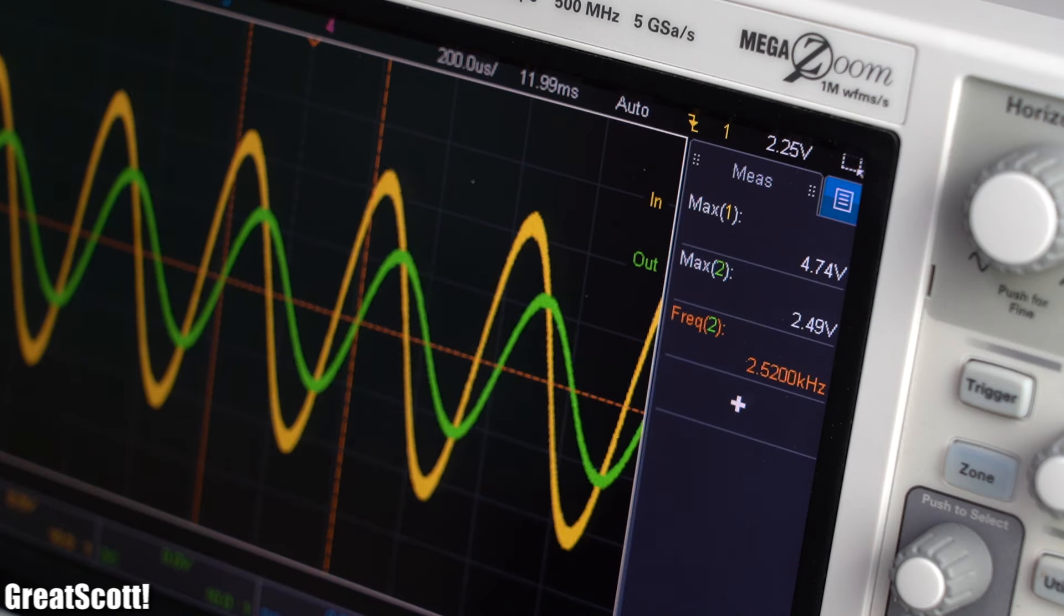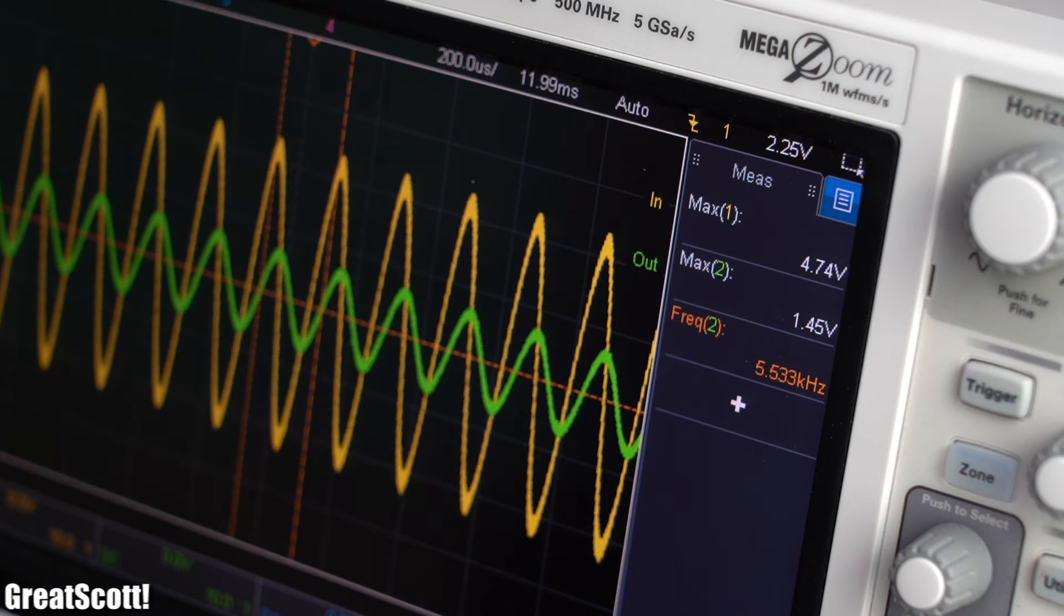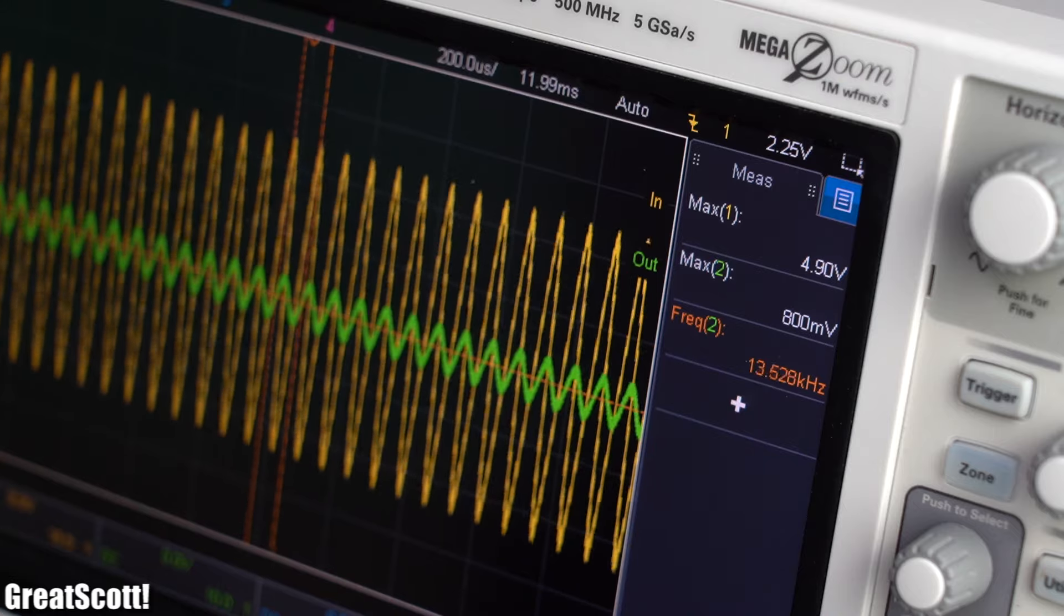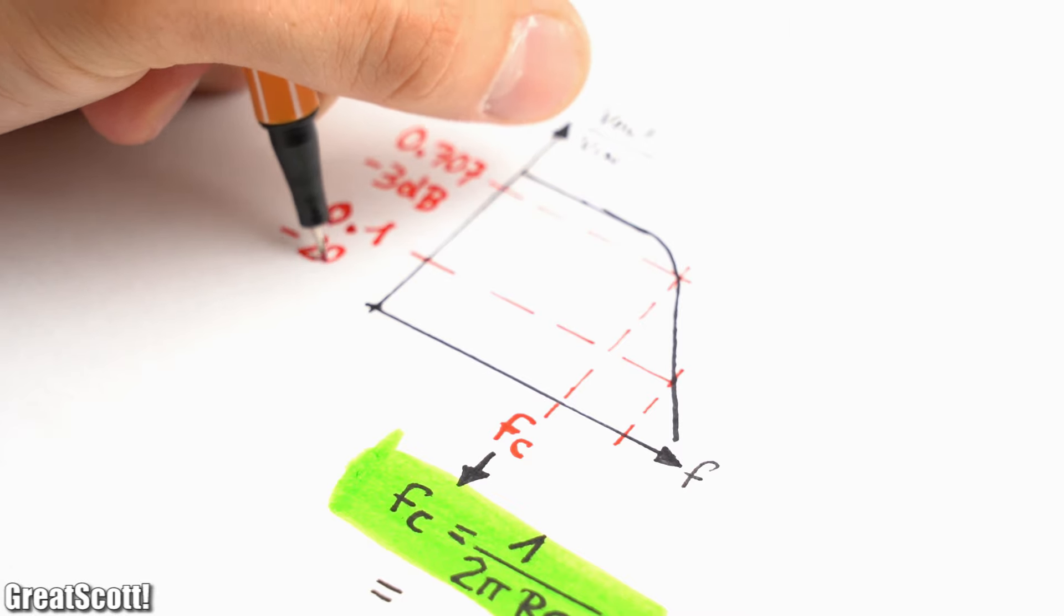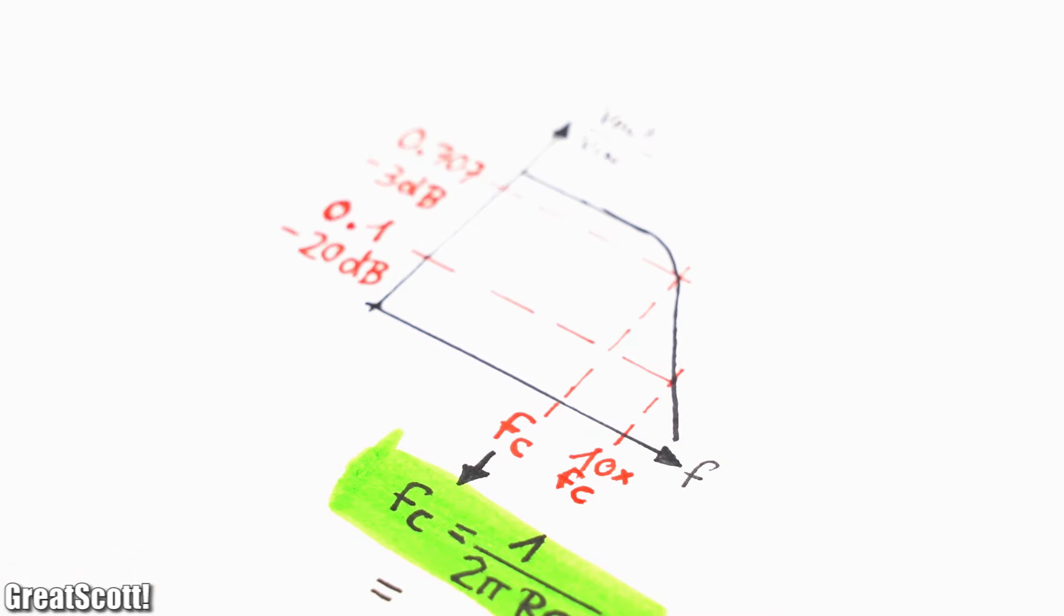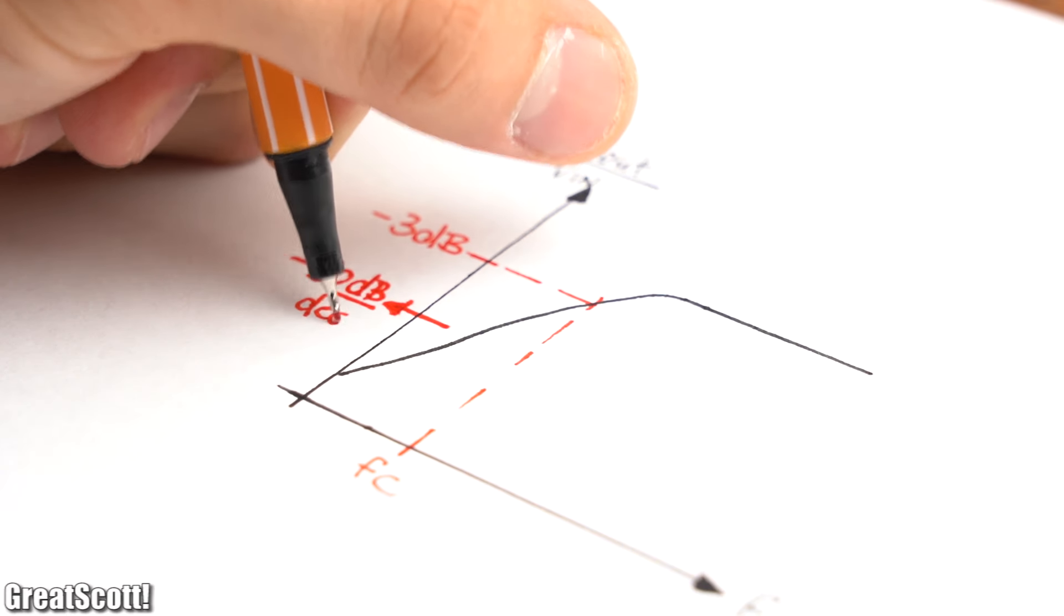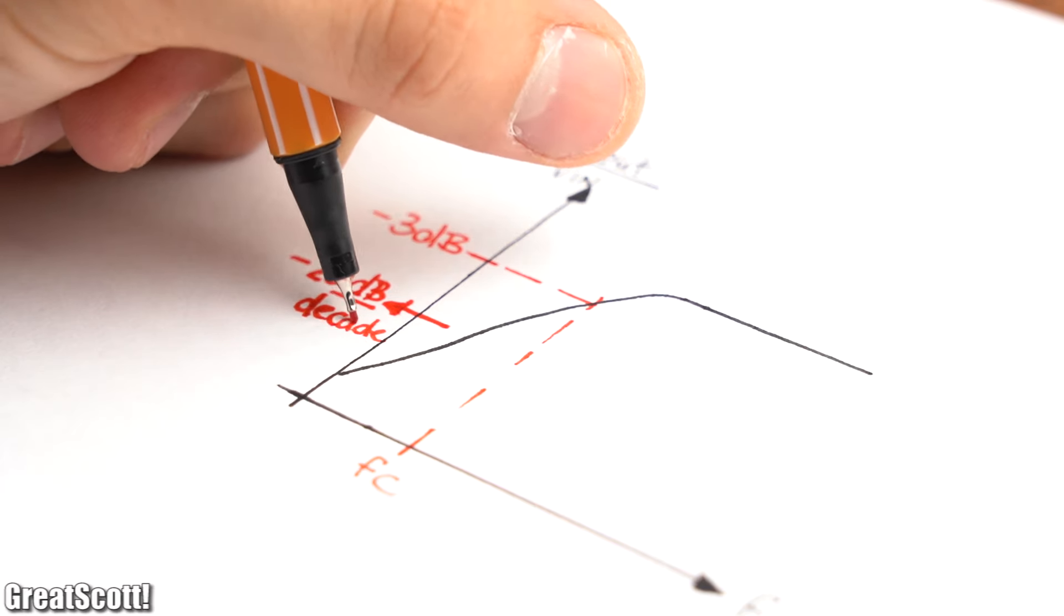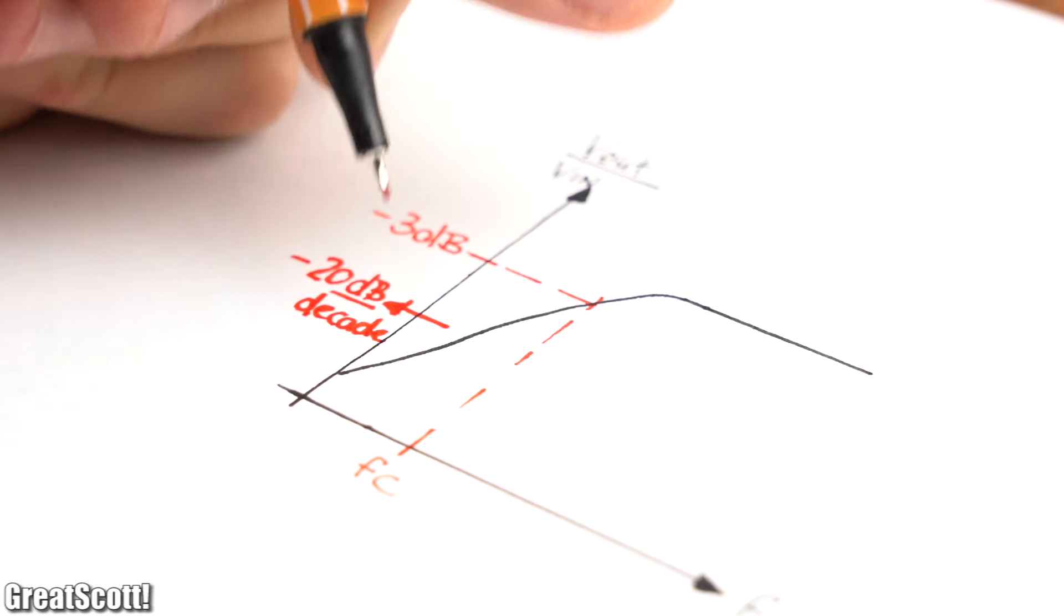Above this frequency the low-pass filter damps the output signal with minus 20 dB per decade, which means 0.1 times the previous input value per every 10 times the frequency. The high-pass filter obviously damps the output voltage with minus 20 dB per decade underneath its cutoff frequency.